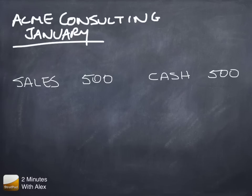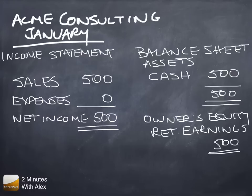From these two numbers we can build up a very simple set of financial statements — the income statement and the balance sheet. Let's do that. The income statement shows us sales of $500. There are no expenses, and so our net income is $500.